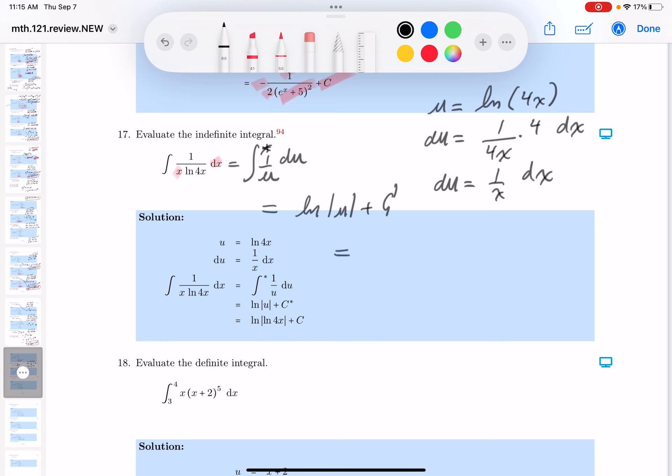All right. Do I know what u is? I do. Natural log, absolute value. And what's u? It's actually the natural log of 4x plus c. Put a box in this. Looks strange.